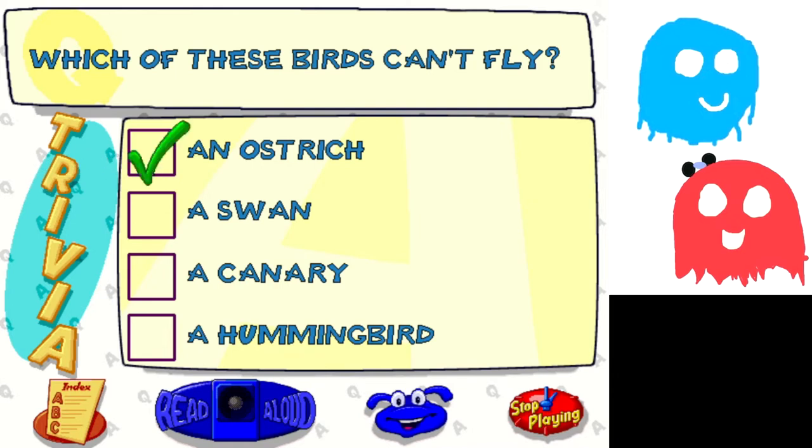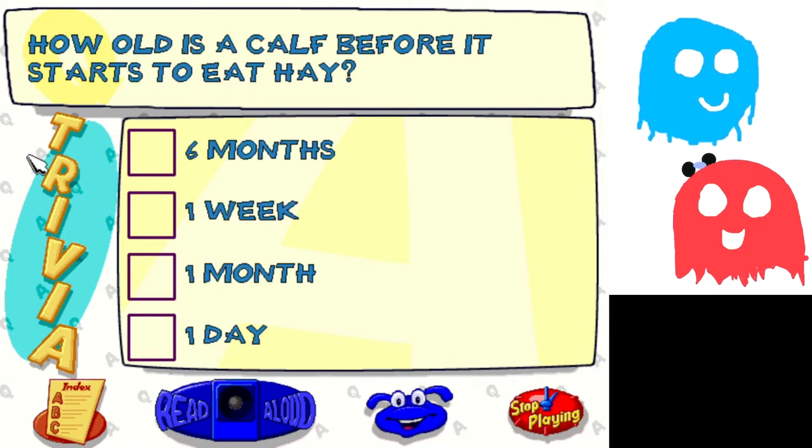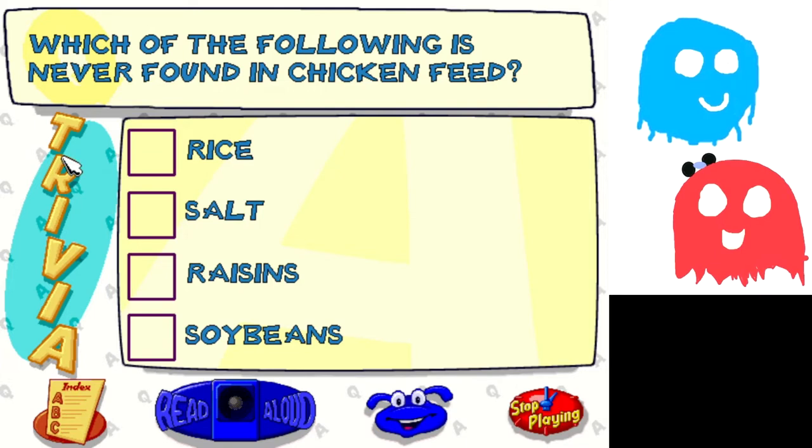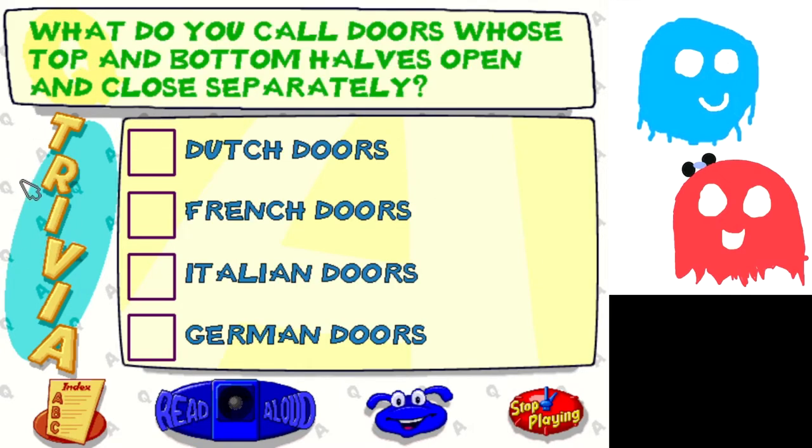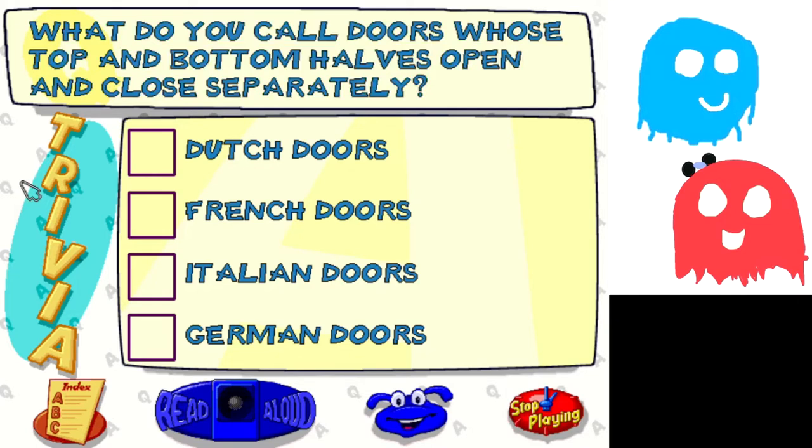Which of these birds can't fly? An ostrich. Ostriches are kind of lame in that regard, unless you're playing Donkey Kong Country where they can fly with a gorilla on their back. How old is a calf that starts to eat hay? One day. So the following is never found in chicken feed. Rice because they choke on it right? I've seen rice in chicken feed before. It's 50 pounds of dairy cow feed. What do you call the doors whose top and bottom halves open and close separately? It's either Dutch or French doors. Italian and German doors don't exist I'm pretty sure. Dutch door. Let's go!